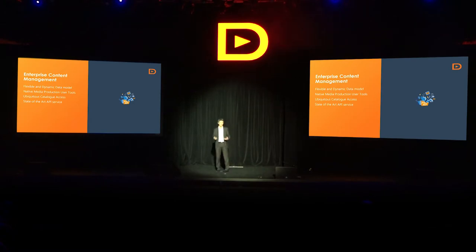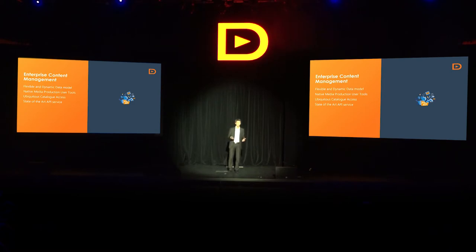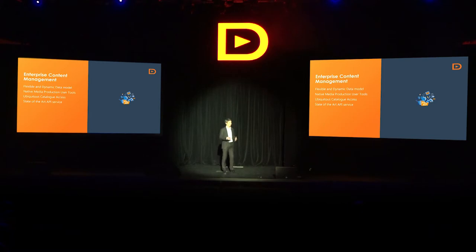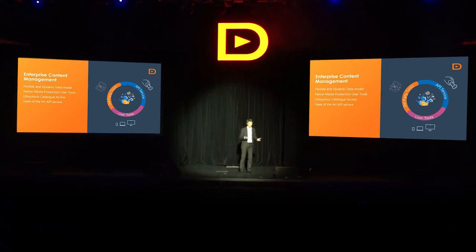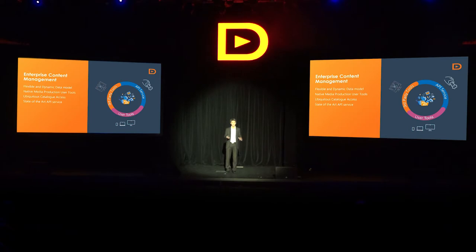Our solutions are based on three main pillars. The first is enterprise content management — it's key to reference any type of asset in a system: audio, video, and more complex objects like bundles, track stacks, and IMF assets. Once you have this flexible and dynamic data model, you make it available through user-intuitive tools, a granular state-of-the-art API service, and third-party tools like Adobe or Avid.